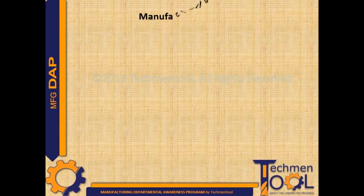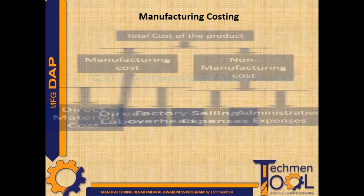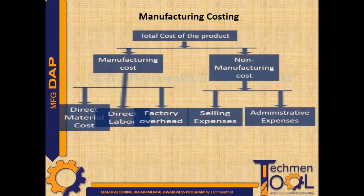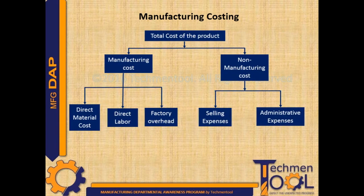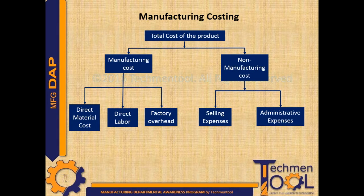The total cost of the product is divided into manufacturing cost and non-manufacturing cost. Manufacturing cost consists of direct material cost, direct labor cost, and factory overhead. Non-manufacturing cost includes selling expenses and administrative expenses.